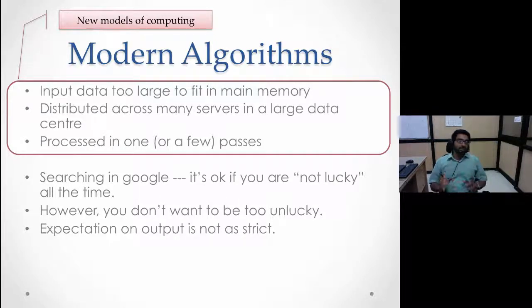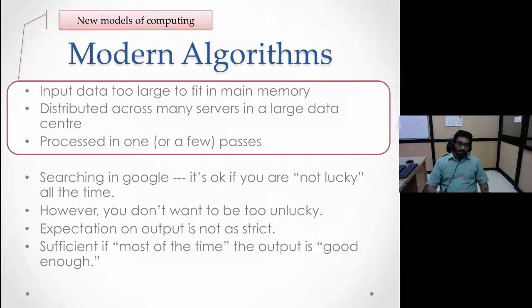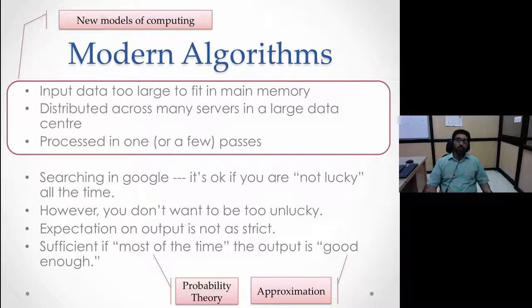A simple way to capture this is: it's efficient if most of the time the output is good enough. 'Most of the time' refers to probability theory, where you want it to be correct with good probability. You don't necessarily need the output to be correct in the absolute sense, just good enough—a good approximation. In the search engine context, it's good enough if the actual website appears within the top five hits.